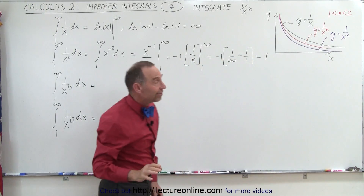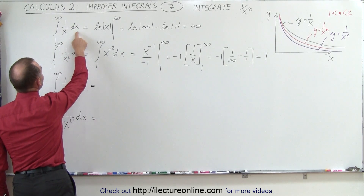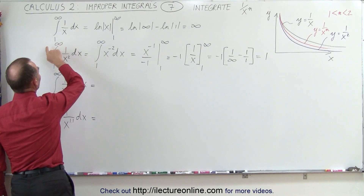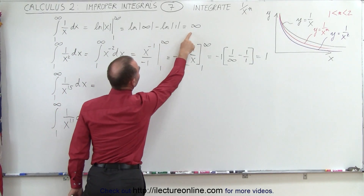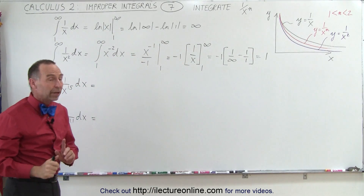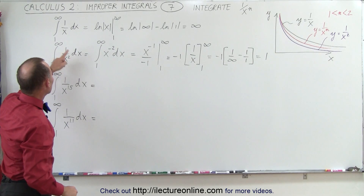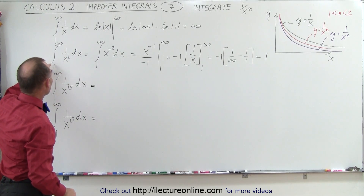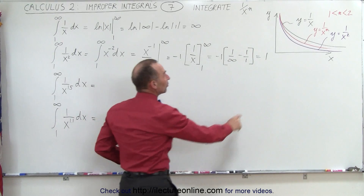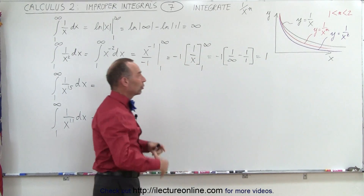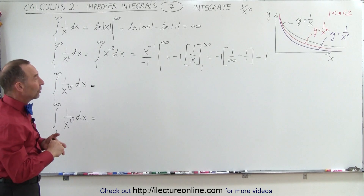We've already seen that if we take the integral of 1 over x dx and evaluate it from 1 to infinity, this will diverge. But if we take the integral of 1 over x squared dx and evaluate it from 1 to infinity, we do get convergence, and the total integral is equal to 1.